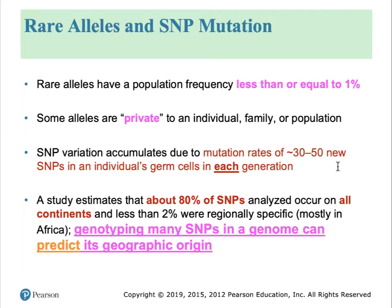Calculations suggest that the number of new mutations accumulating in an individual from one generation to the next — comparing you to your parents — is between 30 and 50 in the gametes of your parents. Some conclusions from these studies are surprising: most of us around the planet are pretty closely related, because about 80% of SNPs are present in all continents. However, Africa is different — the various populations localized in Africa, from the Western Sahara to the Horn of Africa down to Southern Africa, are very different from each other and tend to have very few things in common.